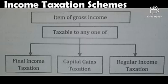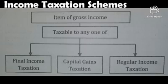An item of gross income is taxable in any of these tax schemes: final income taxation, capital gains taxation, and regular income taxation. The tax schemes are mutually exclusive, meaning if a particular gross income item is taxable in one scheme, it can no longer be taxed under the other taxation schemes.